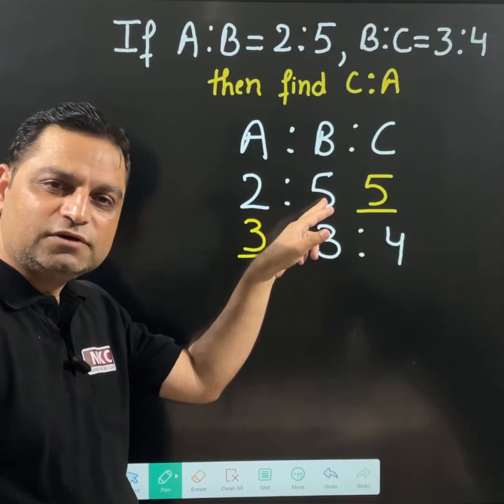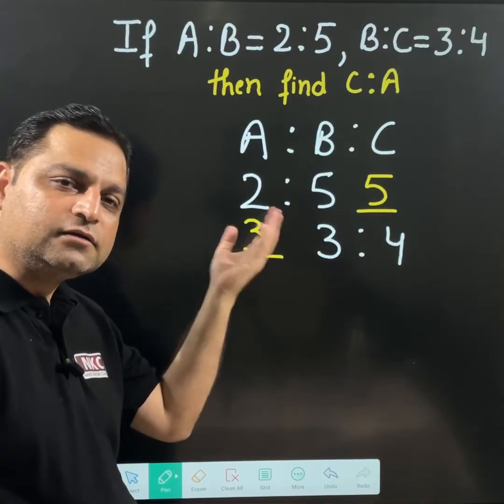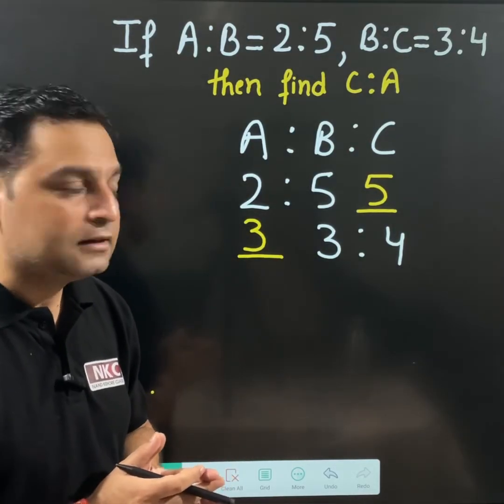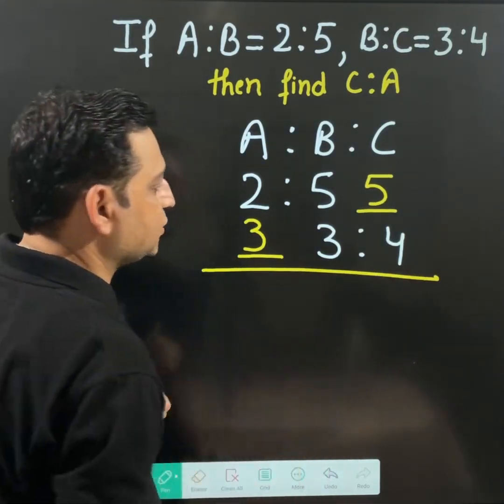Whichever number my row was ending, repeat the same number. Whichever number my row is starting, write the same number if blank is there in the starting of the line. Now once all the places are filled, then just do the multiplication.